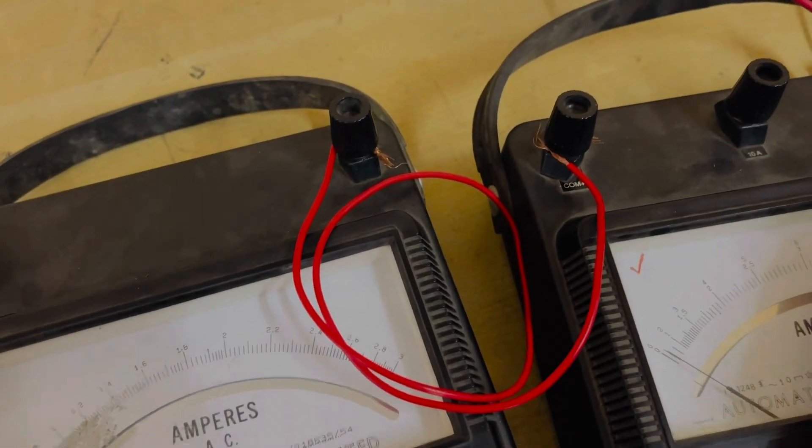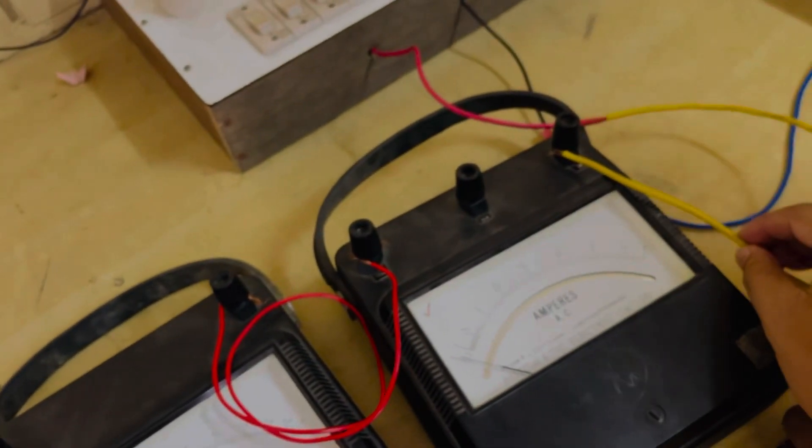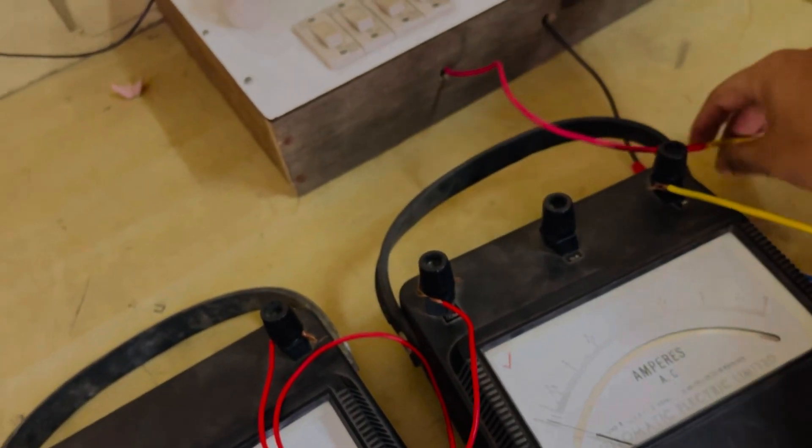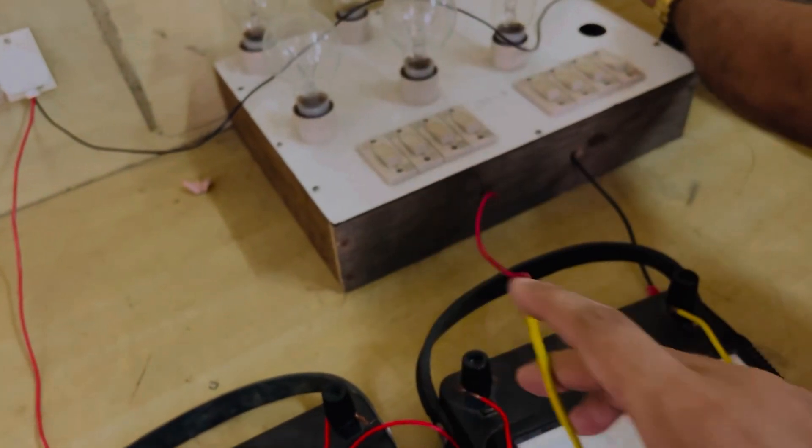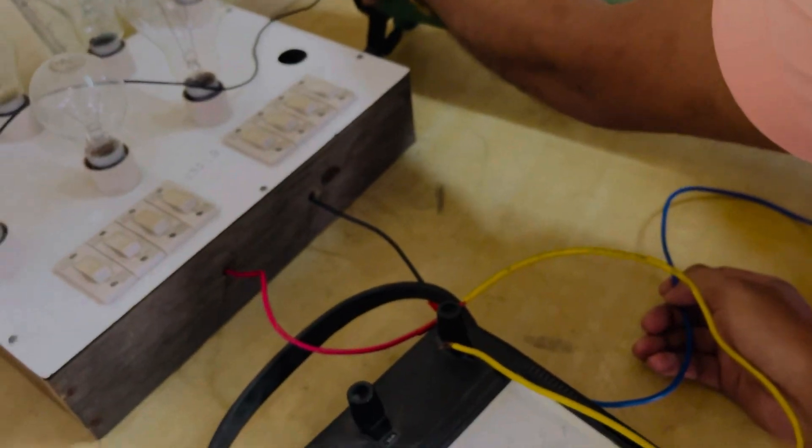From the 0 to 5 amp output, it is connected to the lamp load, and the lamp load output is connected to the rheostat.